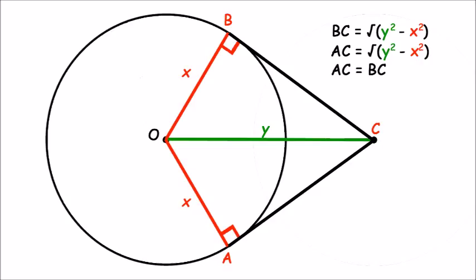So AC is equal to BC, and so they are the same length. And so we have proven that two tangents to a circle from a given point are always equal in length to where they touch the circle.